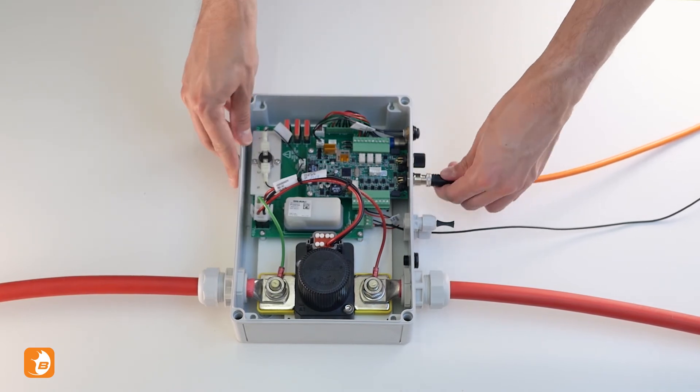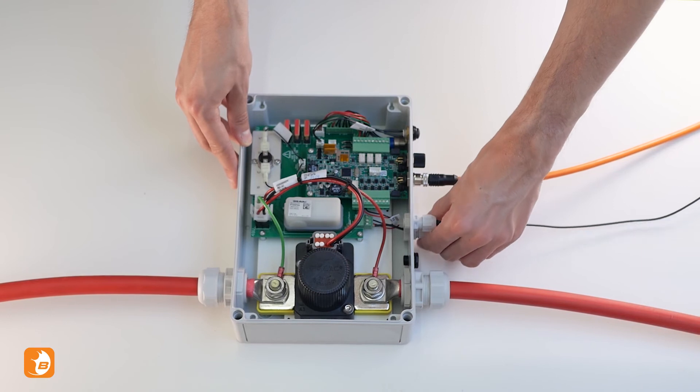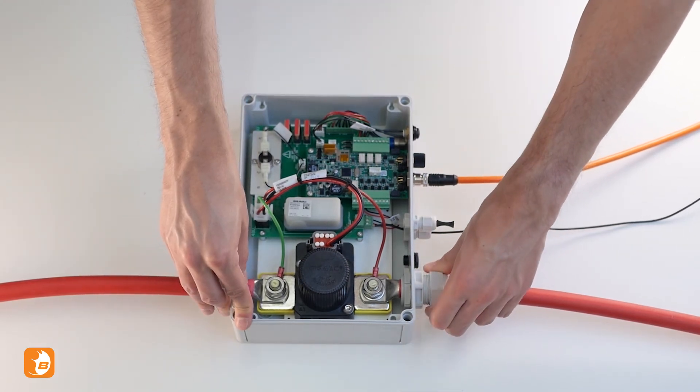Connect your CAN cable to the J1 slot of the battery interface box. Make sure everything is tightened and sealed properly.